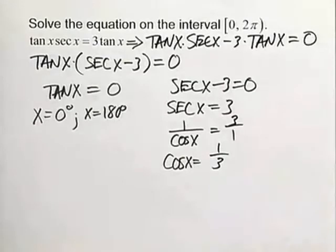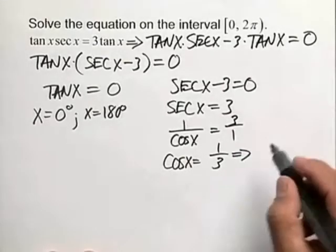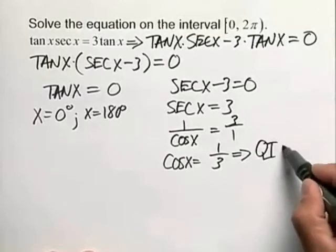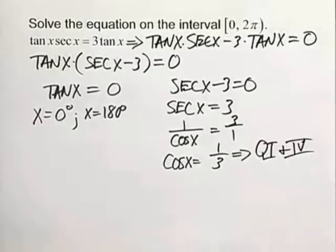Now since the cosine is positive, when does this occur? We know that this happens in quadrant 1 and also in quadrant 4. So let's address quadrant 1.